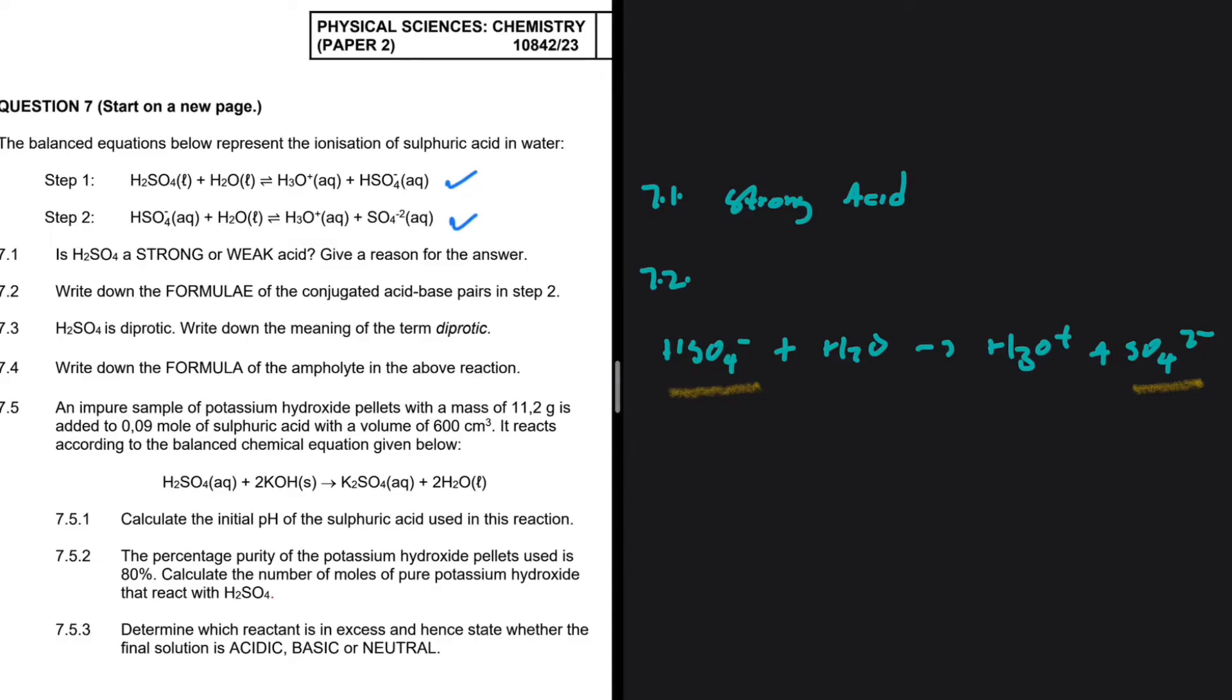So clearly, we can see that HSO4 minus donates a proton to become SO4 2 minus. Because it is a proton donor, it is an acid. And then what is left after an acid donates a proton is the conjugate base.